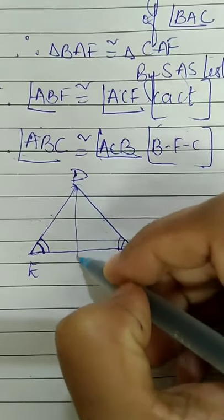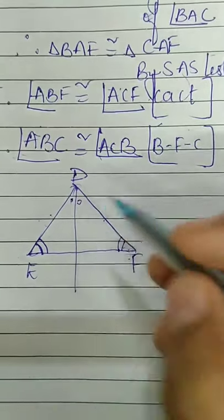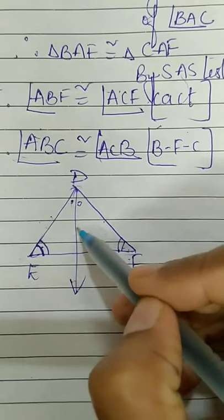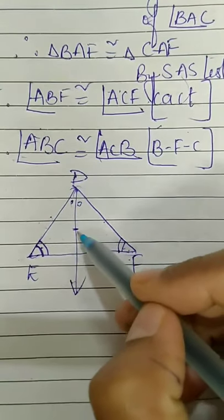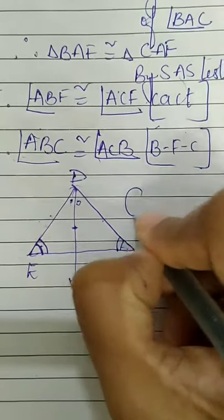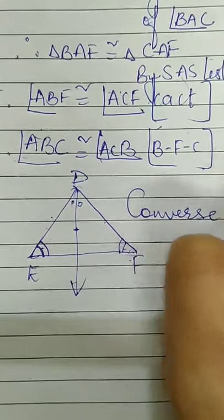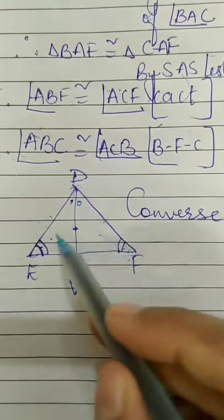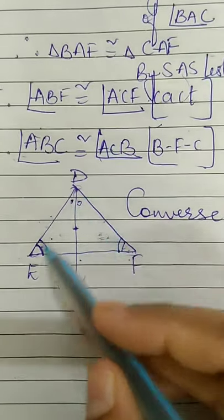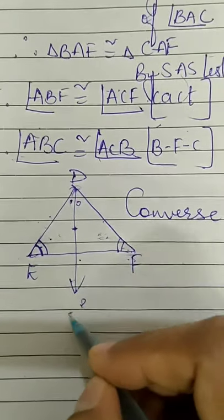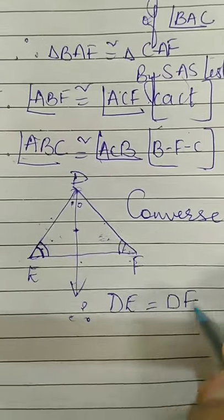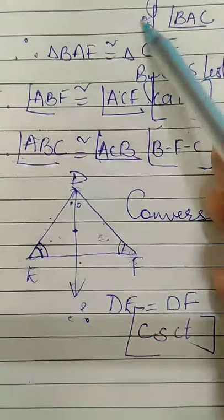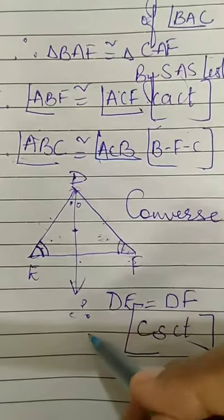You will draw an angle bisector for this angle and take these two triangles to prove them congruent. Just see — AA and this is common side S. So both these triangles are congruent by SAA test. In converse, it is congruent by SAA test or AAS test. Then you will take CSCT and say DE is congruent to DF. This way by simple proof, you can prove isosceles triangle theorem as well as converse of isosceles triangle theorem.